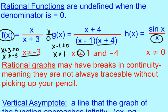You'll see in our notes it says rational graphs may have breaks in continuity, meaning they're not always traceable without picking up your pencil. So for example, if I have a cubic graph, if I was to trace this graph, I'm never picking my pencil up. So there's no break in continuity.